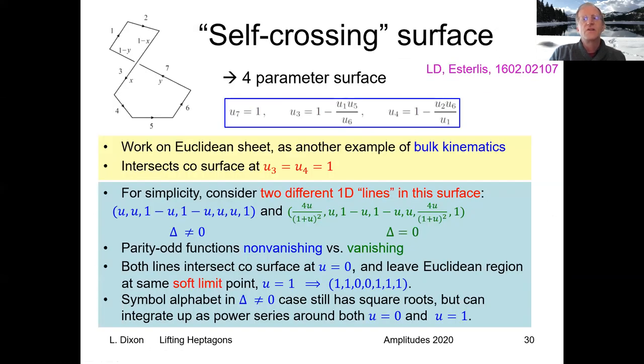The last plot I'll show you is for the self-crossing surface. This is a surface in which the seven-gon looks like this. It looks almost like a four-gon and a five-gon, a square and a pentagon. But in fact, we're going to work in the Euclidean sheet where it doesn't really look like this. There's a four-parameter surface that we studied before. We can't plot it even in four parameters. So we'll look at two different one-dimensional lines through the surface. In one of them, the parity-odd functions are non-vanishing. In the other one, they're vanishing. But they both start in the same place at that corner of the positive region in the CO surface. And they both end in another place that's also a soft limit.